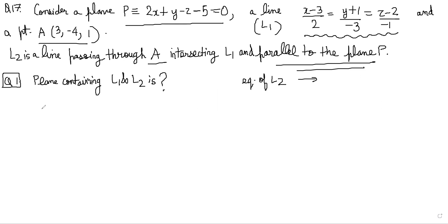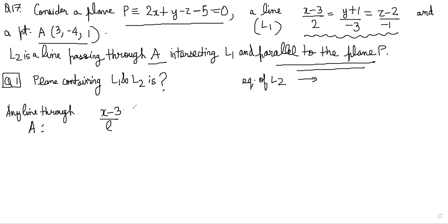Let's think about it. If L2 is parallel to the plane P, then the normal to the plane will be perpendicular to the line as well. We know that L2 passes through A, so any line through A should look like: (x − 3)/L = (y + 4)/M = (z − 1)/N, where L, M, N are direction ratios of line L2.